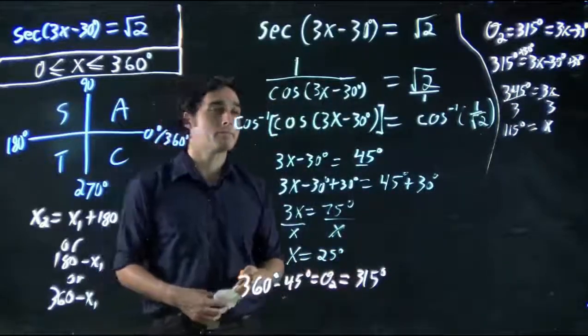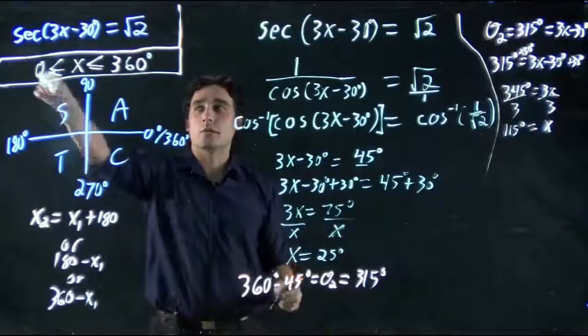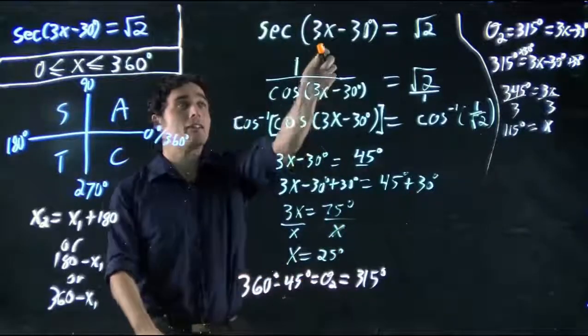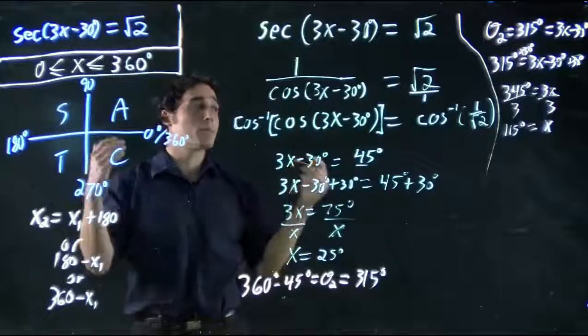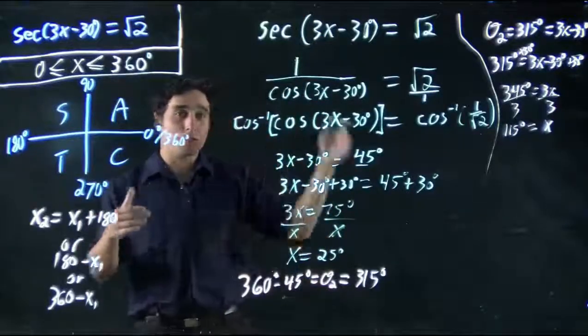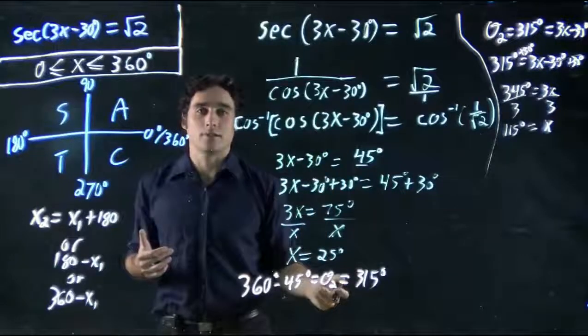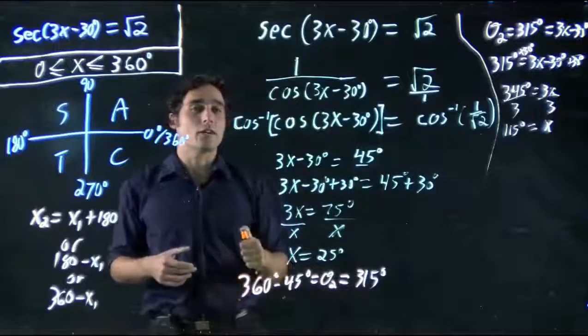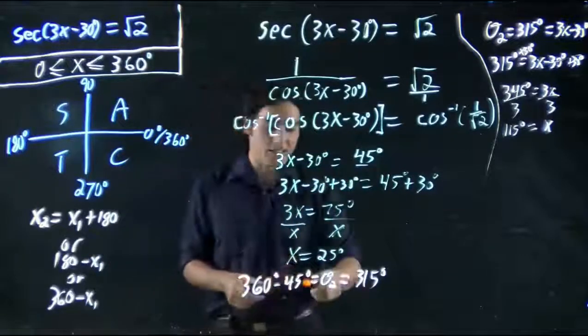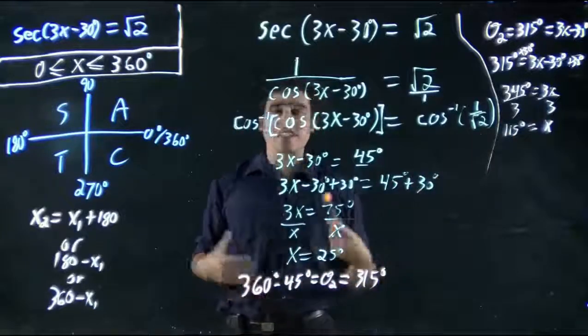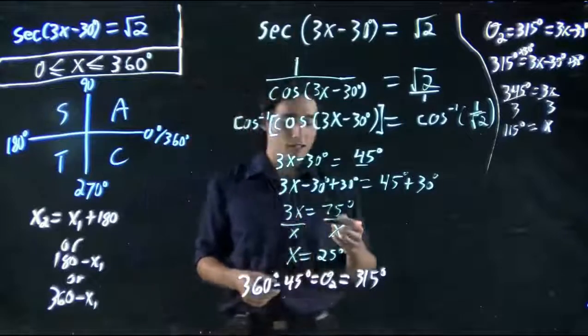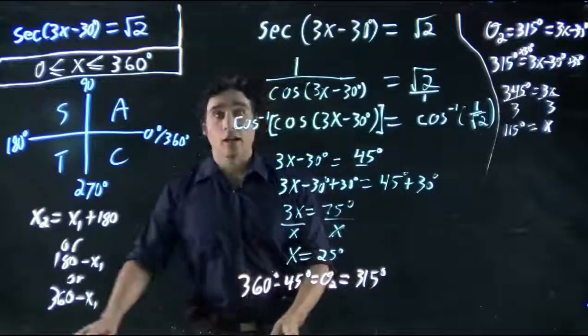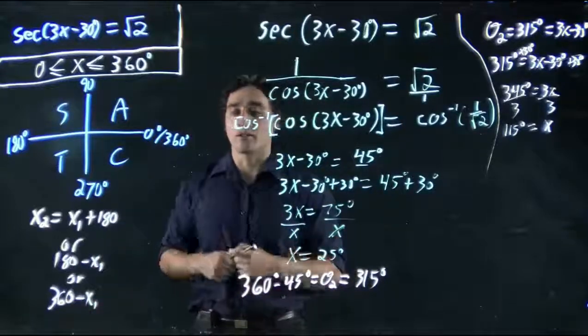But are we done? No. Remember, we're looking between 0 and 360, and we have this dreaded term in front of the x. The term in front of the x is not equal to 1, so the period, how often this function repeats, is influenced. So we have to figure out, is there going to be more solutions? When I look and see 25 and 115, it feels likely I'll get more solutions, but I should check the period first.